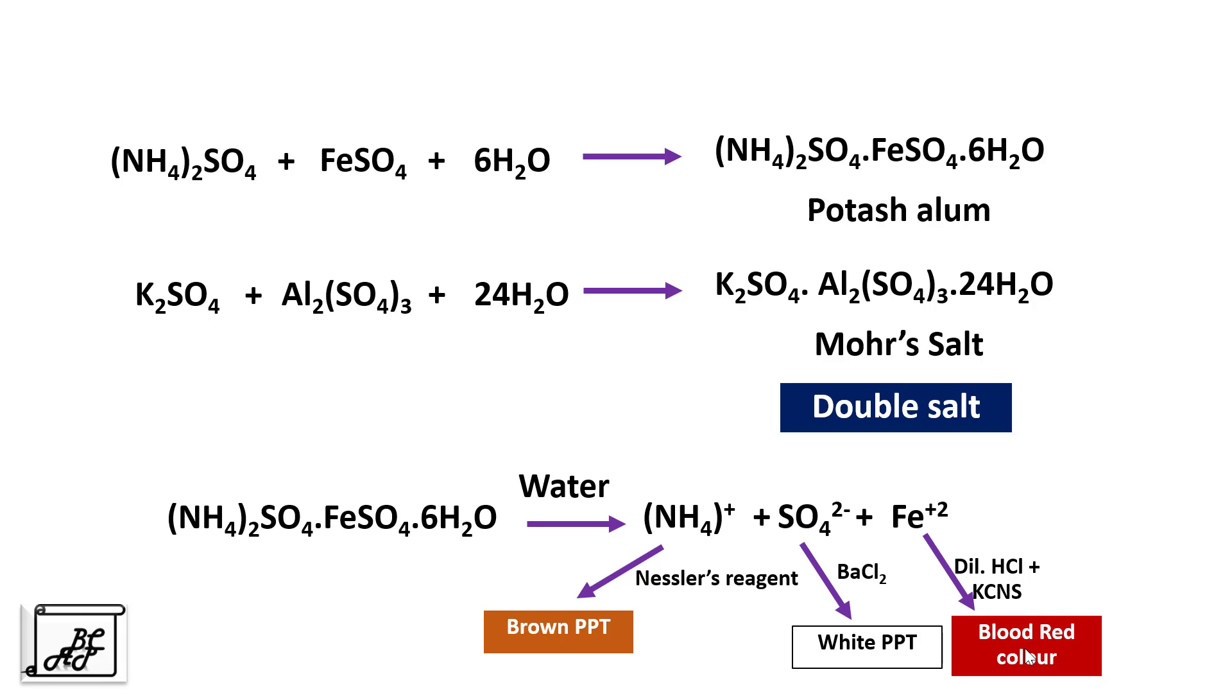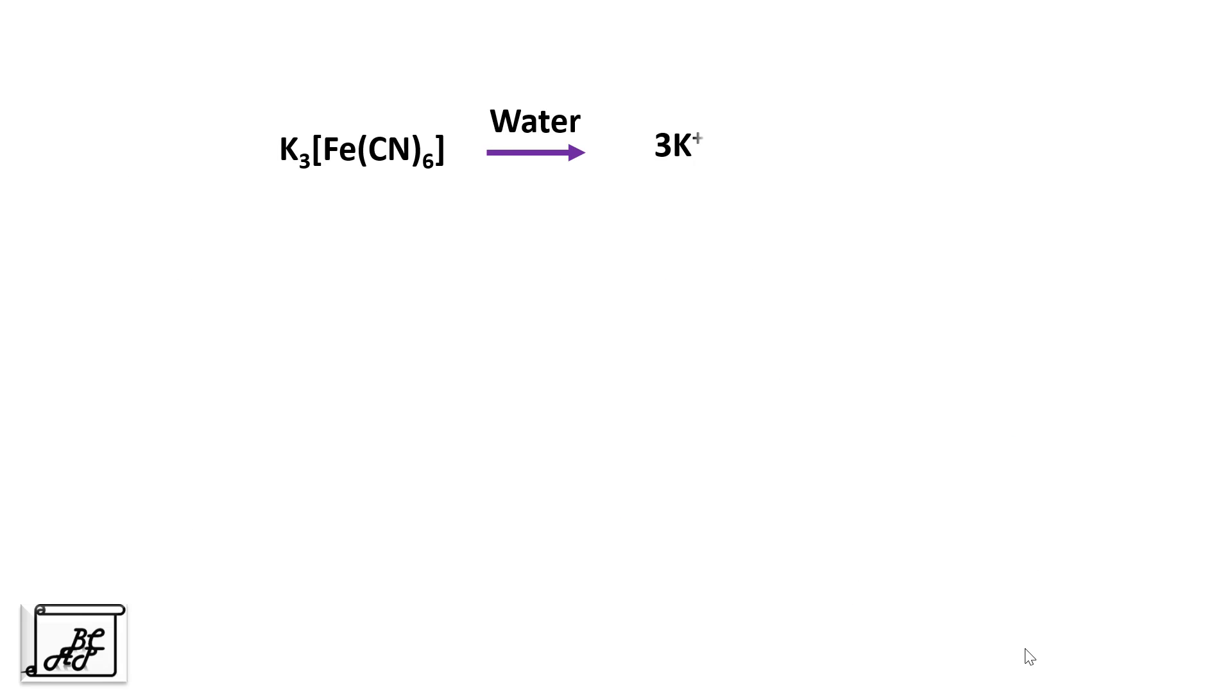Let's move to the next example. For example, K3FeCN6. Now if this compound is added to water, it will get separated into 3K plus plus FeCN6 3-. Similarly, CoNH36Cl3 if it is added to water, it will give CoNH363 plus plus 3 chloride ions.